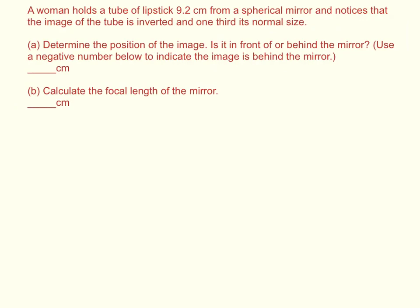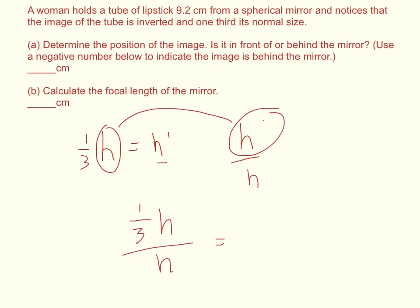So the first thing we want to do is define the change in height. The height of the image is equal to one-third the height of the object. So if I use my magnification equation, which is h prime over h, I can replace h prime with one-third h. One-third h over h equals m. The h's cancel out, and I get that m is equal to one-third or 0.33 repeating.